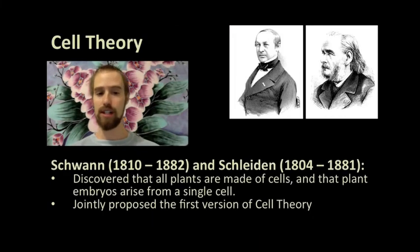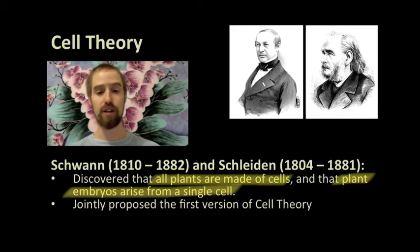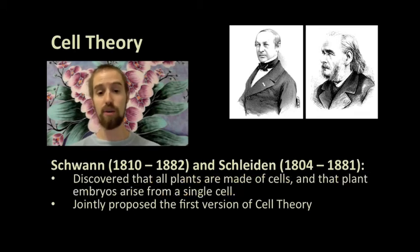Still other scientists, like the German scientists Schwann and Schleiden, contributed to cell theory by contributing their observations about plant cells and embryos to the greater body of knowledge that was developing at the time. It was these two scientists who proposed the first version of cell theory, but it is important to note that their work built upon the work of many other scientists, and their work was continued by many other scientists as well, who contributed even more to our understanding of the cellular basis of life.